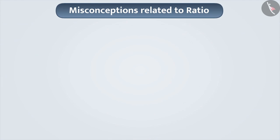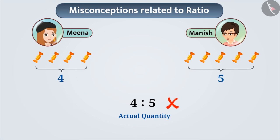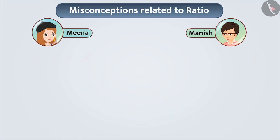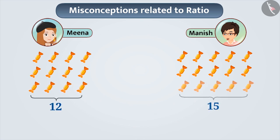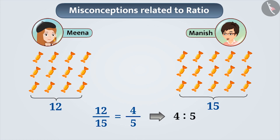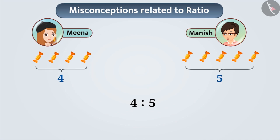Now let us understand some common mistakes. Some students think that we will know the actual quantity by knowing the ratio of two quantities. Suppose the ratio of toffees with Meena to toffees with Manish is 4 is to 5. Students think that Meena has 4 toffees and Manish has 5 toffees. But this is an incorrect understanding. Ratio does not tell us about the exact number of toffees. If Meena has 8 toffees and Manish has 10 toffees, then also we get the same ratio, 4 is to 5. Similarly, if the numbers are 12 and 15 respectively, we again get the same ratio, 4 is to 5. The correct understanding is that the ratio of 4 is to 5 tells us the relation between Meena and Manish's toffees — for every 4 toffees of Meena's, Manish has 5 toffees.